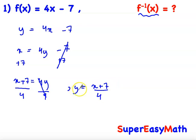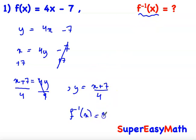So here we can write, instead of y, f⁻¹(x). So the inverse function f⁻¹(x) = (x + 7) / 4.